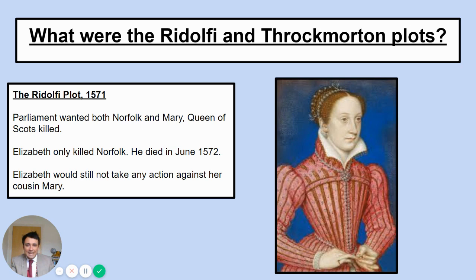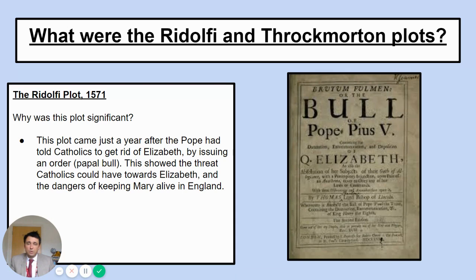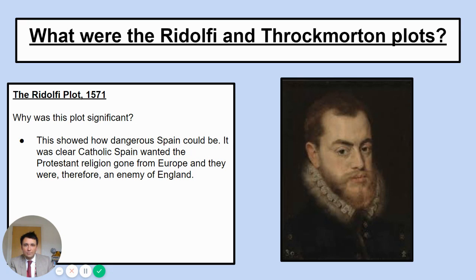But Elizabeth still would not take any action against her cousin Mary, who was kept in castles as a prisoner. This plot is significant because it came just one year after the Pope had told all Catholics across the world to get rid of Elizabeth via a papal bull. It showed the threat of Catholics and how dangerous it was to keep Mary alive in England. It also showed how dangerous Spain could be — arguably the most powerful country in the world at this time — and that Catholic Spain wanted Protestantism gone from Europe, meaning Spain and England could be seen as enemies.